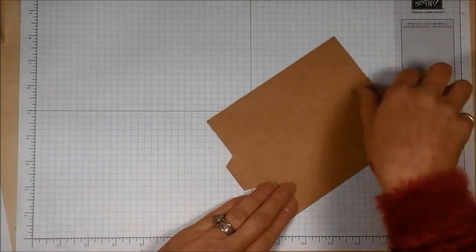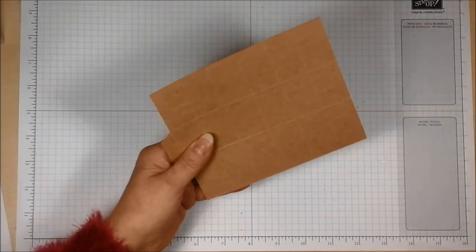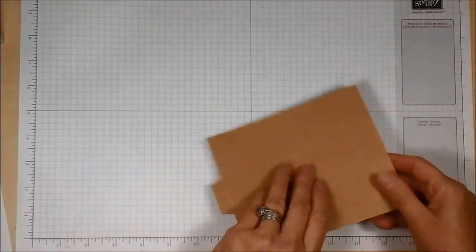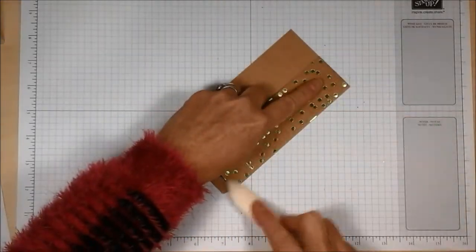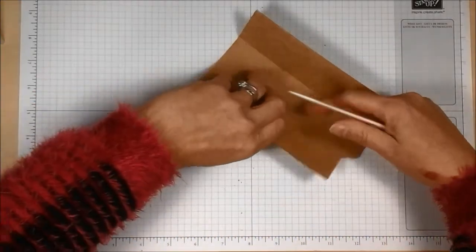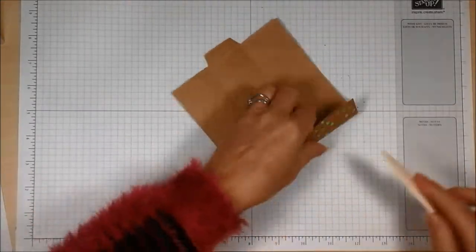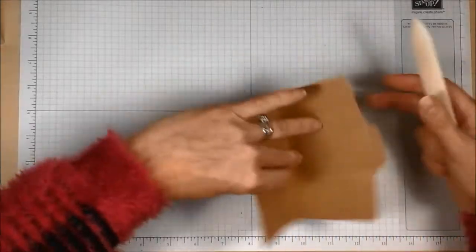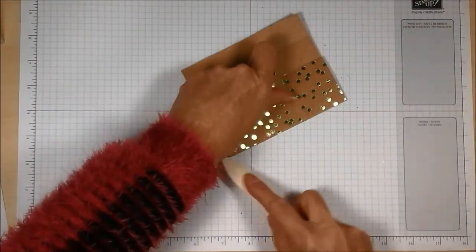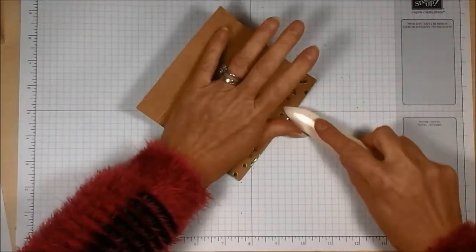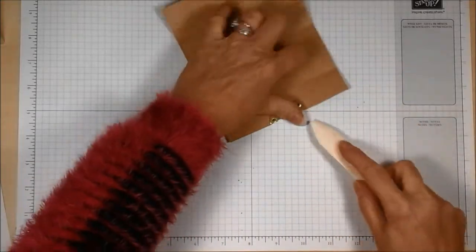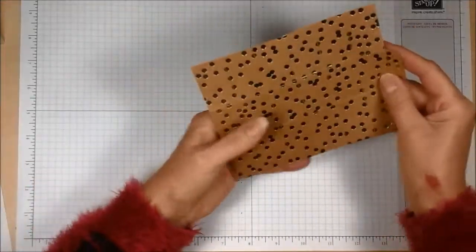That just helps me a little bit later on. So now I need to bring in my bone folder. I'm going to crease with those nice sharp creases. This is quite thick, hard, which is great. It makes really nice sturdy boxes, which is what you want.